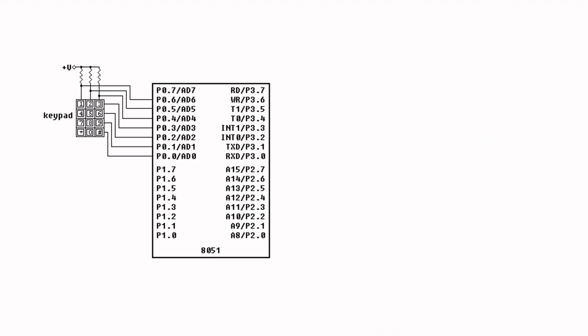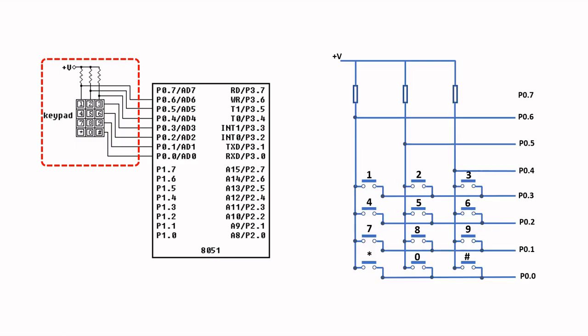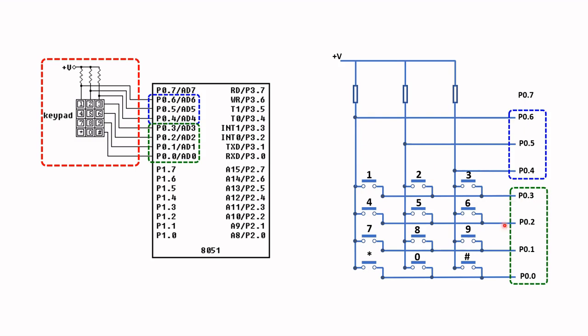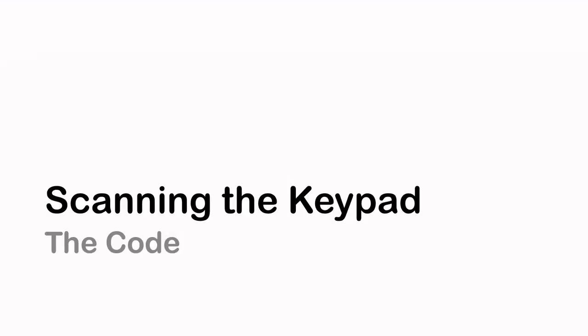This is the schematic diagram of the EdSim 51 keypad interface. I would like to focus on the construction of the keypad. Generally, a three-by-three keypad is an array or matrix of push-button switches shown here, and these are the connections from the keypad to Port 0 of the 8051.